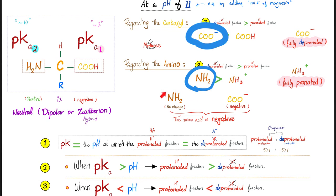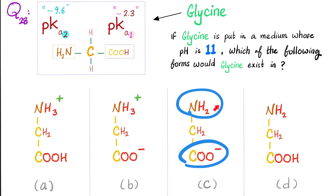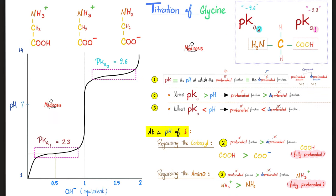When one wing is negative and the other has no charge, the entire amino acid is negative. So we choose COO⁻ and NH2, meaning glycine will exist in form C at pH 11.